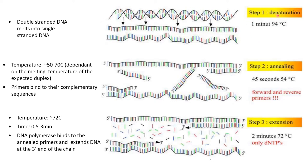The first step is denaturation. In the denaturation step, the double-stranded DNA is melted down into single-stranded DNA at a temperature of 94 degrees centigrade for 1 minute. In the second step, annealing, the temperature ranges from 50 to 70 degrees centigrade depending on the melting temperature of the expected duplex, typically for about 45 seconds.